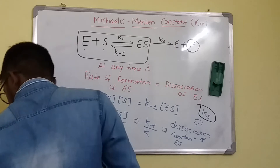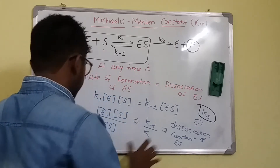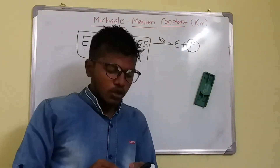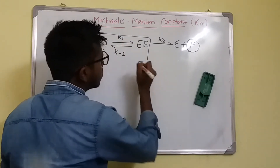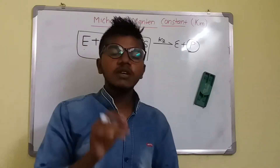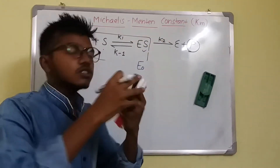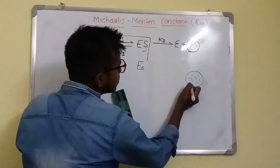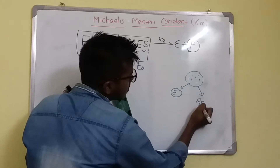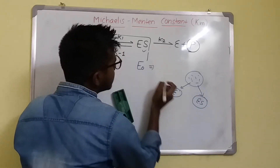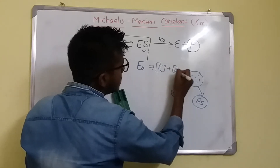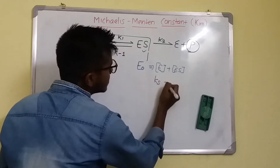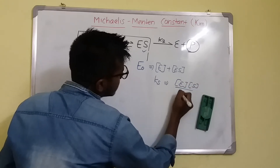At any time, the total concentration of enzymes — let us call this E-naught — equals the enzyme in free form plus the enzyme in combination with substrate. So the total enzyme means E plus ES. The dissociation constant K-S equals E·S divided by ES. Now, we can equate the value of E, which gives us E equals K-S times ES divided by S.